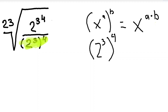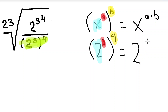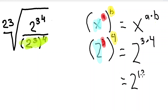Let me highlight these values to show how they correspond: b is yellow, a is red, and the base x is 2. So this means 2 to the power of 3 times 4, and we can simplify 3 times 4 — that's 2 to the power of 12.